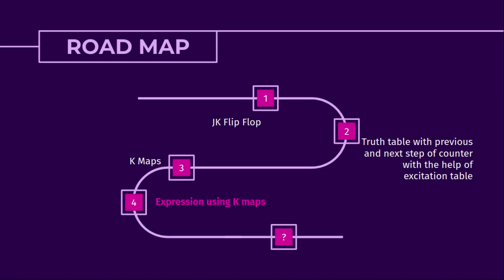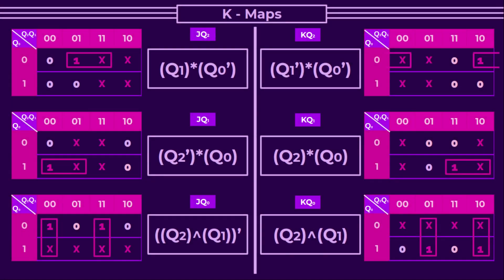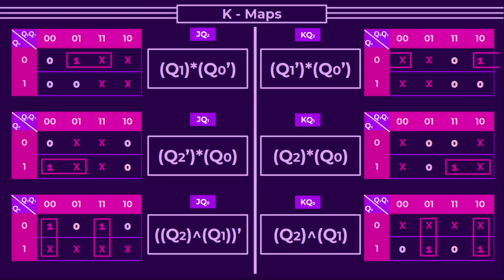Next on our roadmap, we will evaluate the expressions using k-maps. We obtain the following expressions for the J and K inputs of each flip-flop: JQ2 = Q1·Q0'; KQ2 = Q1'·Q0'; JQ1 = Q2'·Q0; KQ1 = Q2·Q0; JQ0 = (Q2 XOR Q1)'; and KQ0 = Q2 XOR Q1.